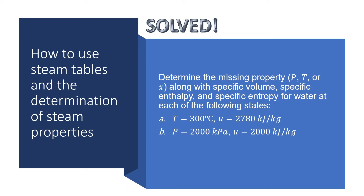Determine the missing property — either pressure, temperature, or quality — along with specific volume, specific enthalpy, and specific entropy for water at each of the following states. Letter A: at a temperature of 300 degrees Celsius and specific internal energy of 2,780 kJ per kilogram. Letter B: at a pressure of 2,000 kilopascals and specific internal energy of 2,000 kJ per kilogram.